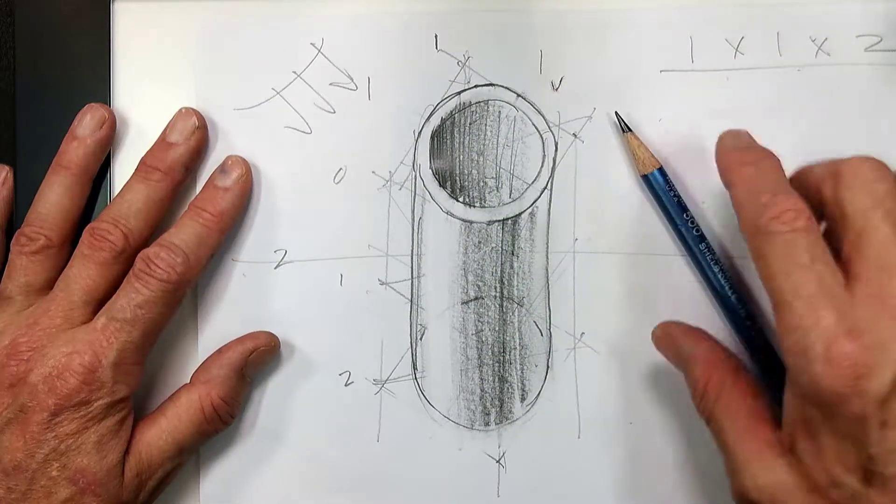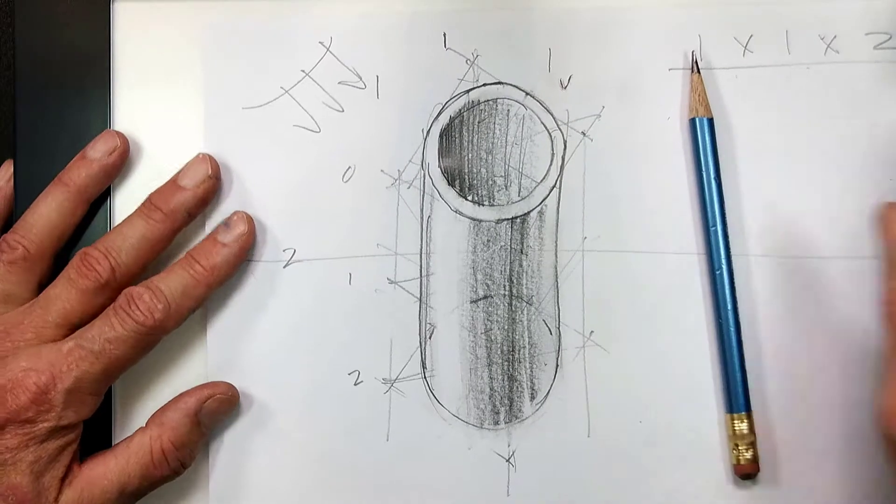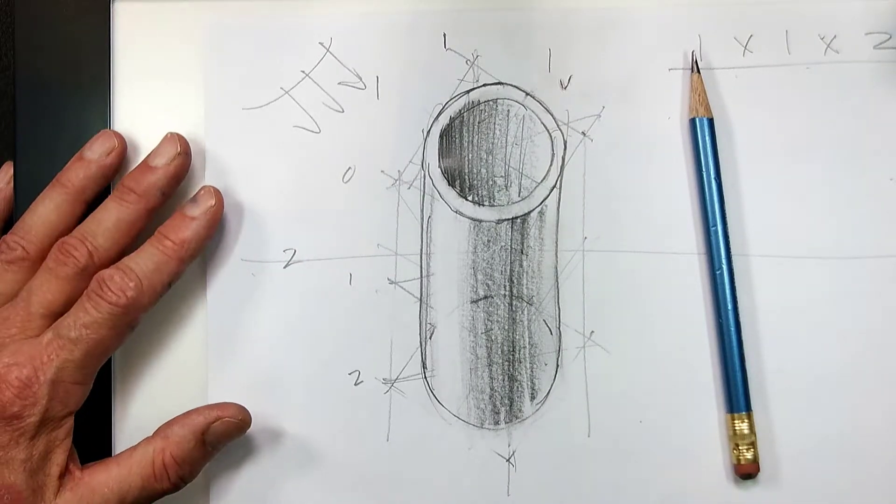Okay. That is a top oblique of a cylinder that has some shading.